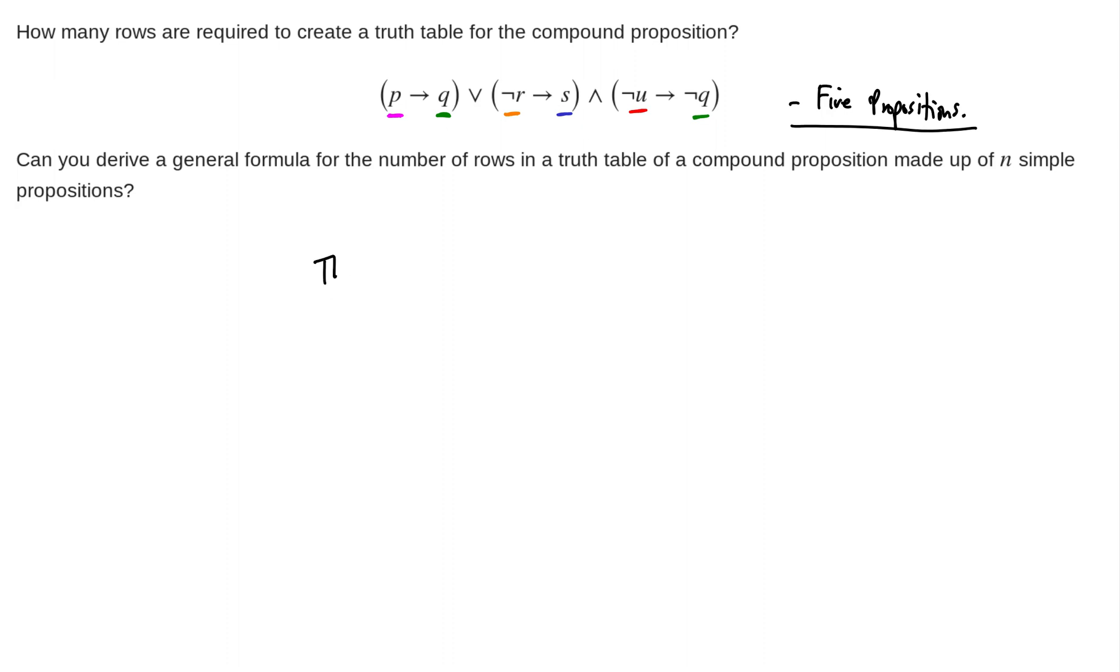And so the total number of rows necessary is going to be 2 to the fifth power or 32 rows. So that's to get all possible combinations of these five different propositions' truth values, we need to create a truth table with 32 rows. That's a lot, right? So that's why we don't want to actually do this one because that means every column is going to have 32 entries in it. So we'll do 16 T's, 16 F's for the first one and then cut it down to 8 by 8 by 8 by 8, etc.